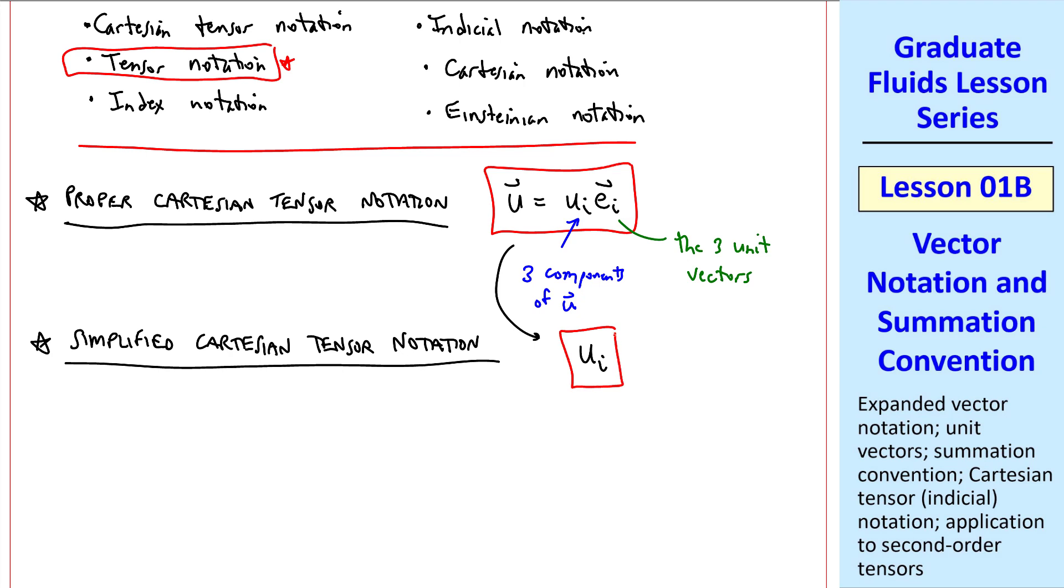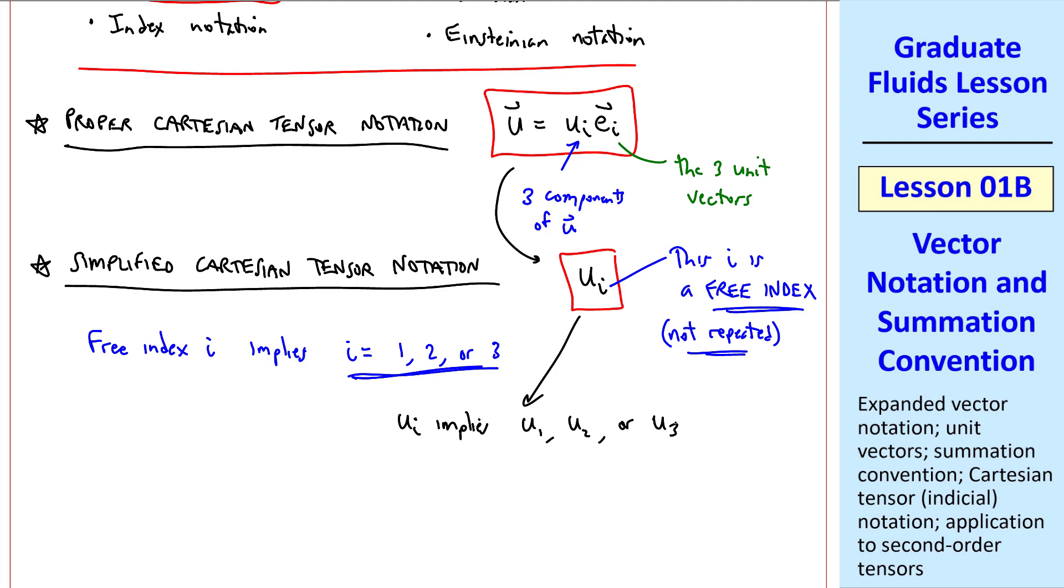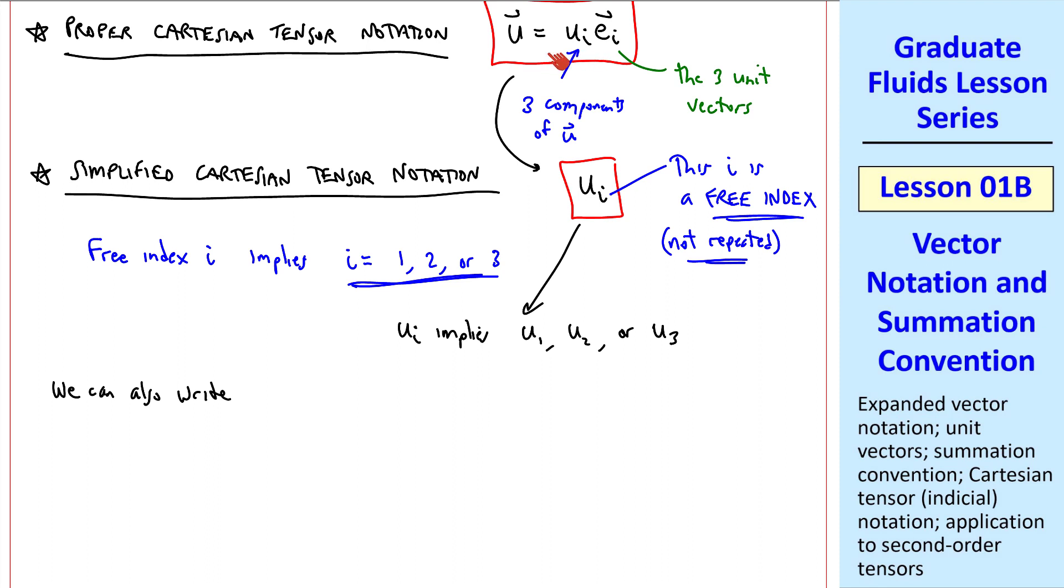Now we'll get even simpler, what I call simplified Cartesian tensor notation, where we write simply ui. This i is called a free index, since it's not repeated. So free index i implies i equal 1, 2, or 3. When you see u sub i, in your mind you should be thinking that these are the three components, 1, 2, or 3. In other words, ui implies either u1, u2, or u3, the components of u.